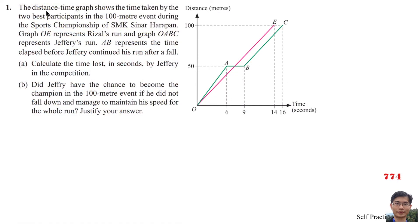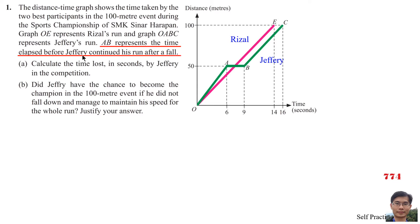The Distance-Time Graph shows the time taken by the two best participants in the 100m event during the Sports Championship of SMK Sina Harapan. Graph OE represents Grijal's run and Graph OABC represents Jeffrey's run. AB represents the time elapsed before Jeffrey continues his run after a fall.